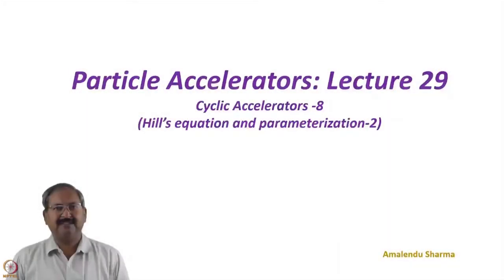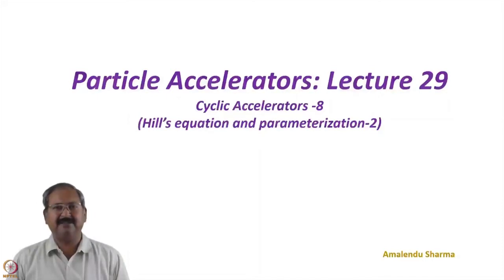In the last two lectures we have seen how to solve Hill's equation. One of the methods was using matrices, and another method gave us three optical parameters: alpha, beta, and gamma. Now we will extend our studies on Hill's equation and these parameters.